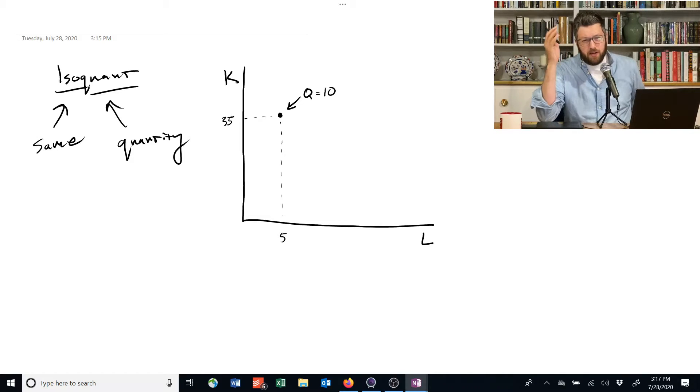But that's not the only way to get 10 units of output. There might be other ways. In particular, maybe there's a way that uses a lot of labor, but not very much capital. So we'll say there's an alternative set of instructions, an alternative way to go where instead of 5, maybe use 15 laborers. And instead of 35 units of capital, let's say that this is 8.